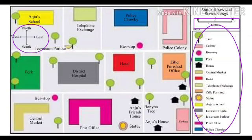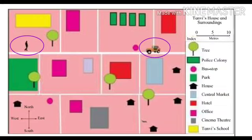You can see the same diagram, but now with many things included. You can see the index, a scale, and four directions. Now, in this map we are going to find a mistake. There are some objects which we are not supposed to include in a map. Can you tell me, student? Yes, correct — moving vehicles and walking people. So this map is an incorrect map.